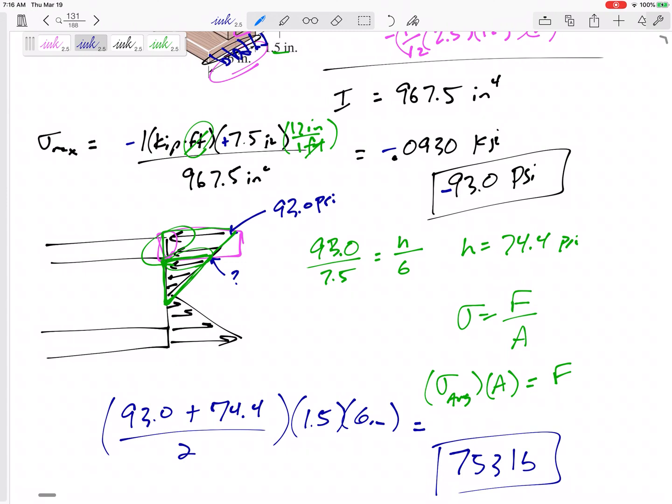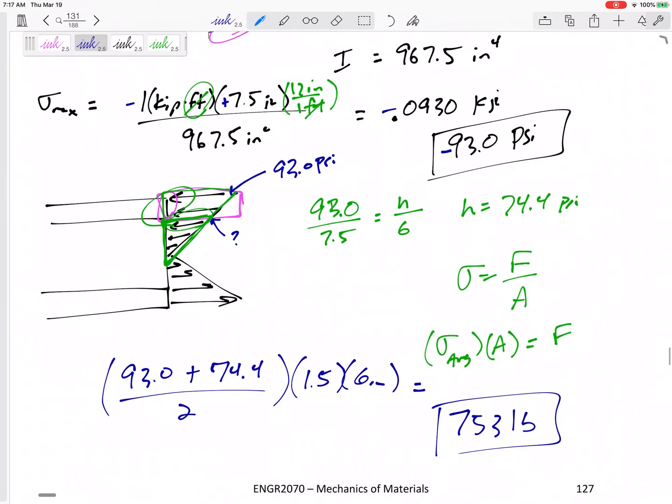But this is linear, so we can take the average stress on the top of the board and multiply it times the cross sectional area of the top board to find the equivalent force. So it's almost as if this top board has a force of 753 pounds. So that's helpful to know that these nails need to be able to hold that 753 pound force.